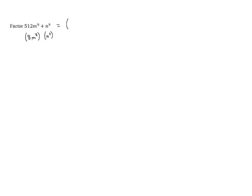We have F plus L which is going to be 8m cubed plus n cubed times F squared which is 64m to the sixth minus FL.